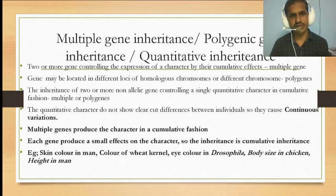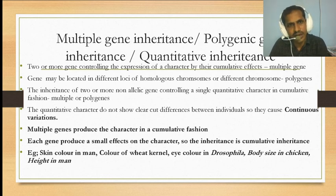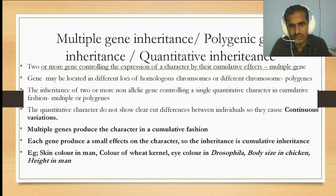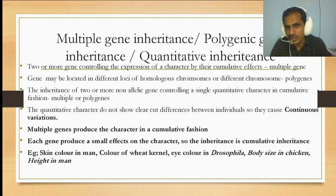Today we are going to discuss multiple gene inheritance, also called polygenic inheritance or quantitative inheritance — all are the same. Multiple gene inheritance means two or more alleles situated in the same chromosomes, also called multiple genes. Two or more genes controlling the expression of a character by their cumulative effects is called multiple gene.